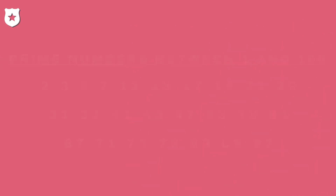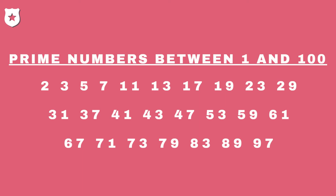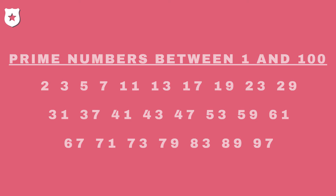They are 2, 3, 5, 7, 11, 13, 17, 19, 23, 29, 31, 37, 41, 43, 47, 53, 59, 61, 67, 71, 73, 79, 83, 89, 97.